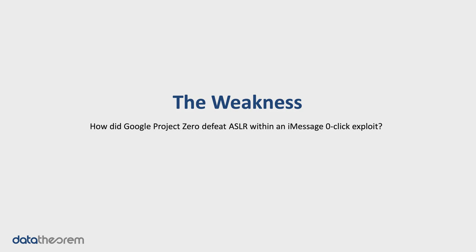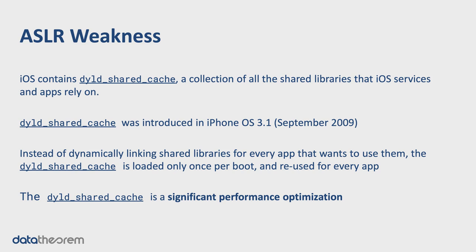The question now becomes: we know that Google Project Zero carried out a zero-click attack against iMessage, which necessarily means they found some vulnerability that allowed them to disclose where things were placed by ASLR. So how did they do this? There's one more piece to look at: a scheme that's been in iOS for a long time called the DYLD Shared Cache. The DYLD Shared Cache is a performance optimization in iOS.